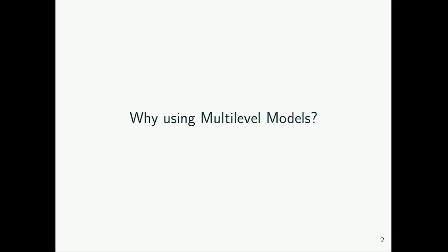The first thing is why use multilevel models. The fact is that most data we have in science, and also in other areas, is actually multilevel — that is, we have data on different levels. For example, students nested within classes, nested within schools. Students in the same class are dependent on each other because they spend like six hours per day together and share the same teacher. So we have to account for the fact that students within the same class are more dependent on each other than students of different classes.